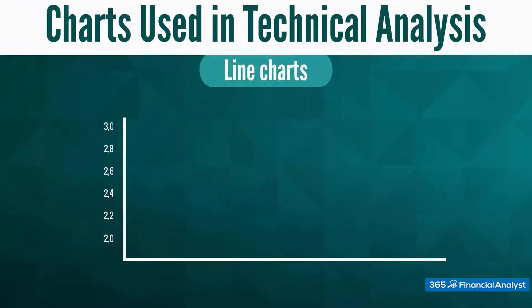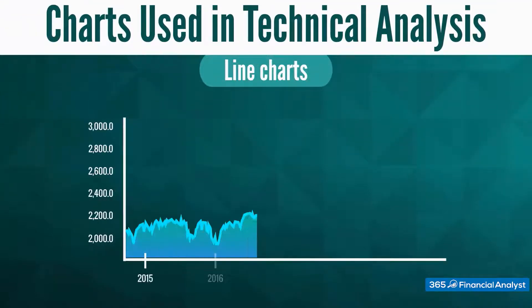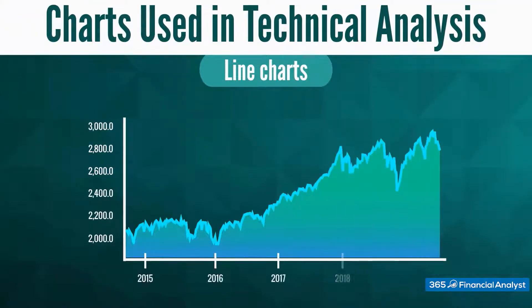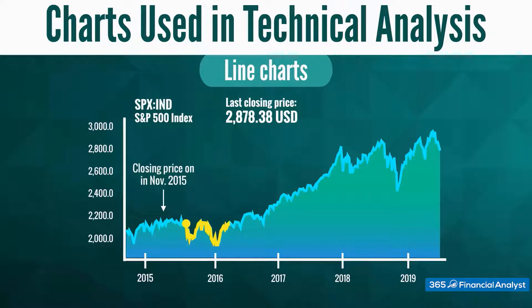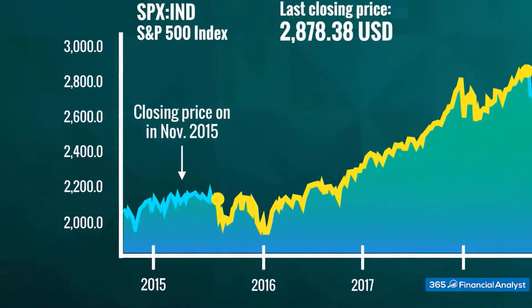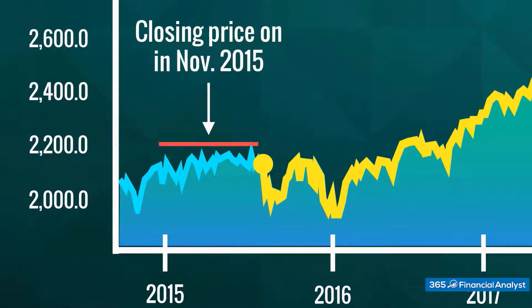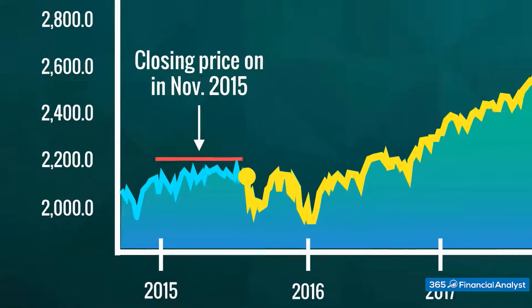The first is the line chart. Here is a five-year line chart showing the development of the S&P 500 from 2015 to 2019. It's quite straightforward to read — the closing price of each trading day is connected by a line, hence the name line chart.